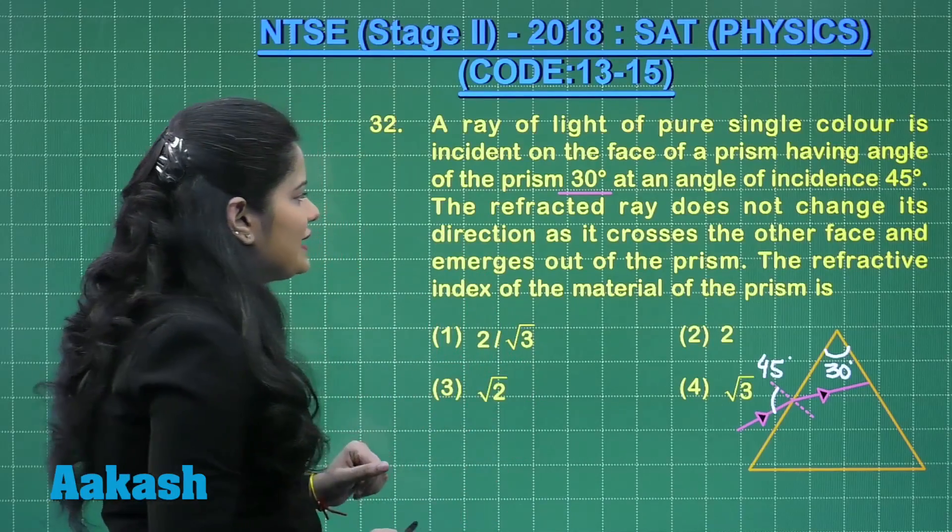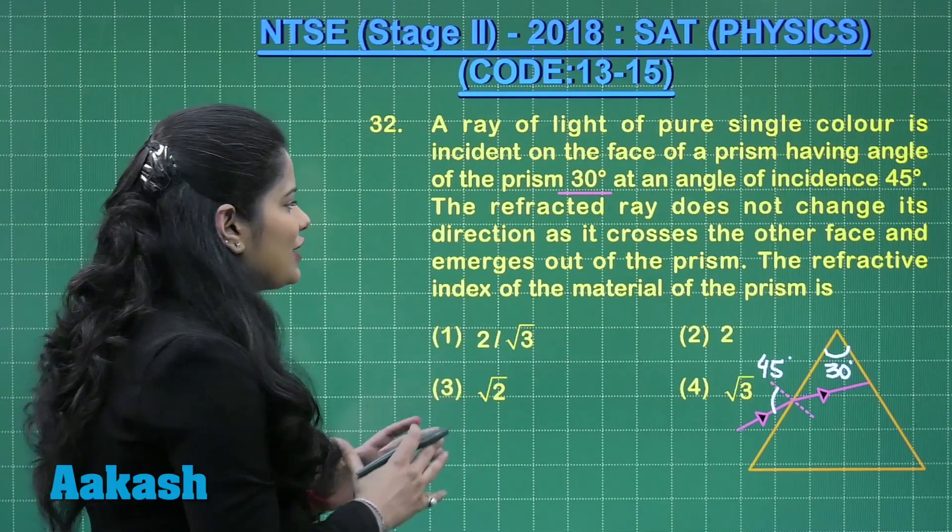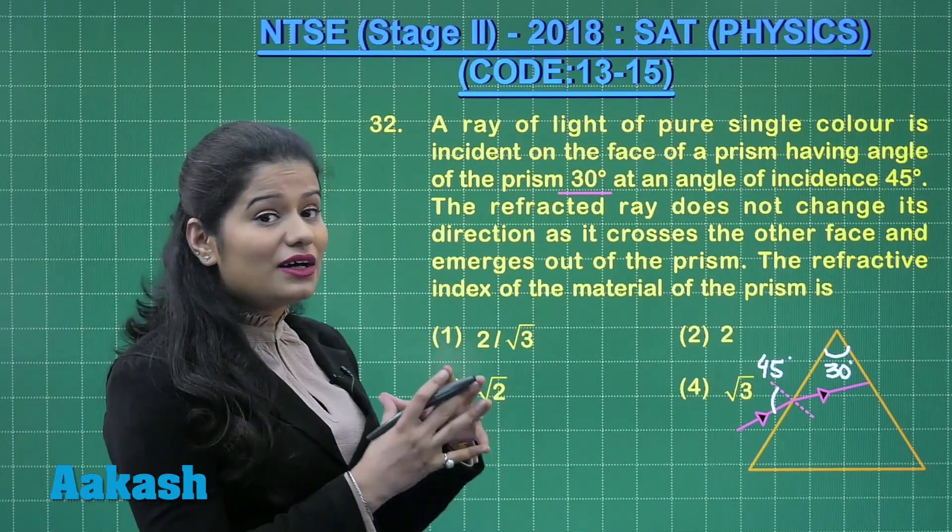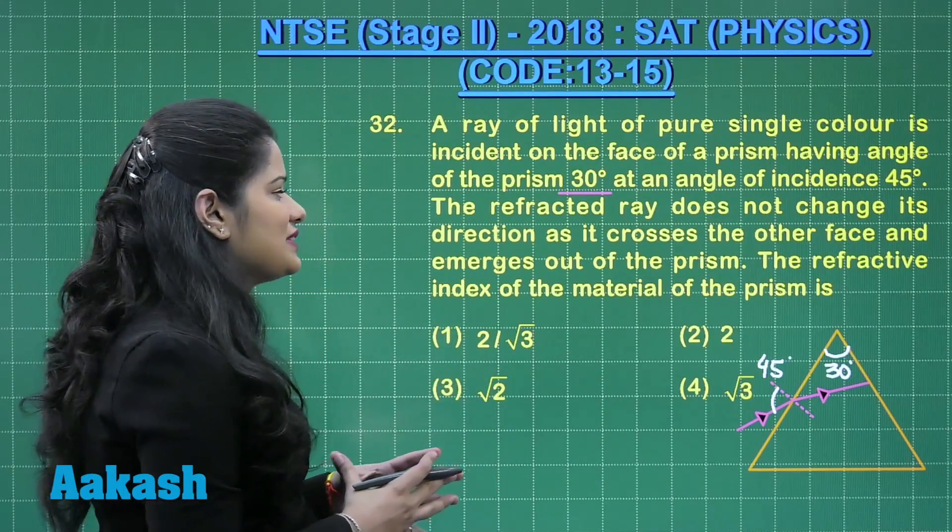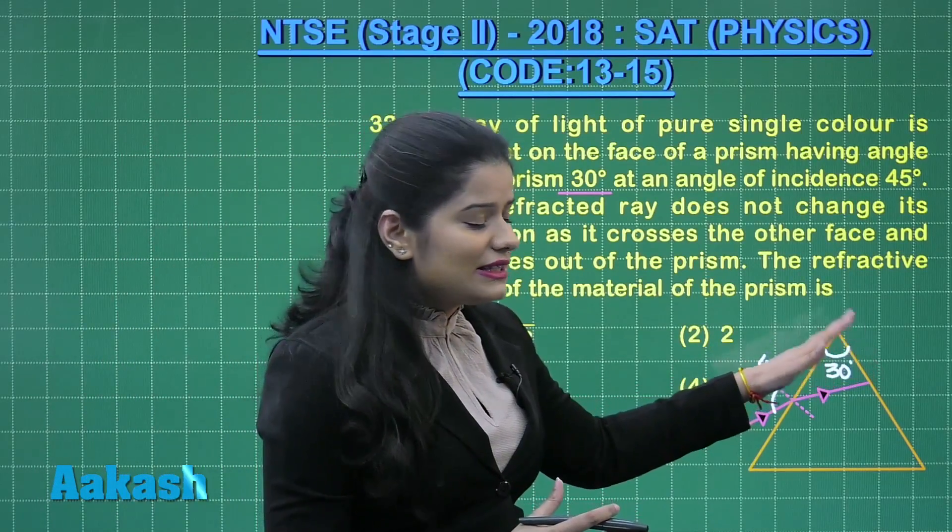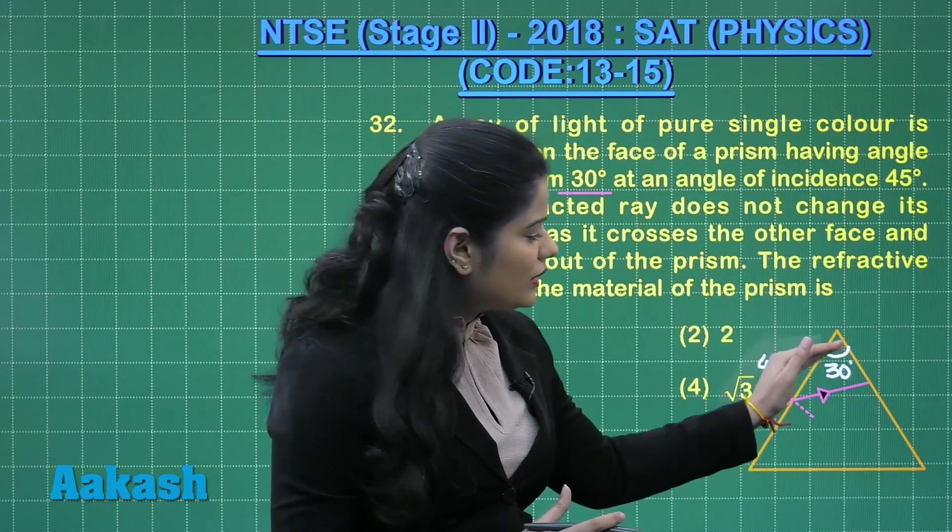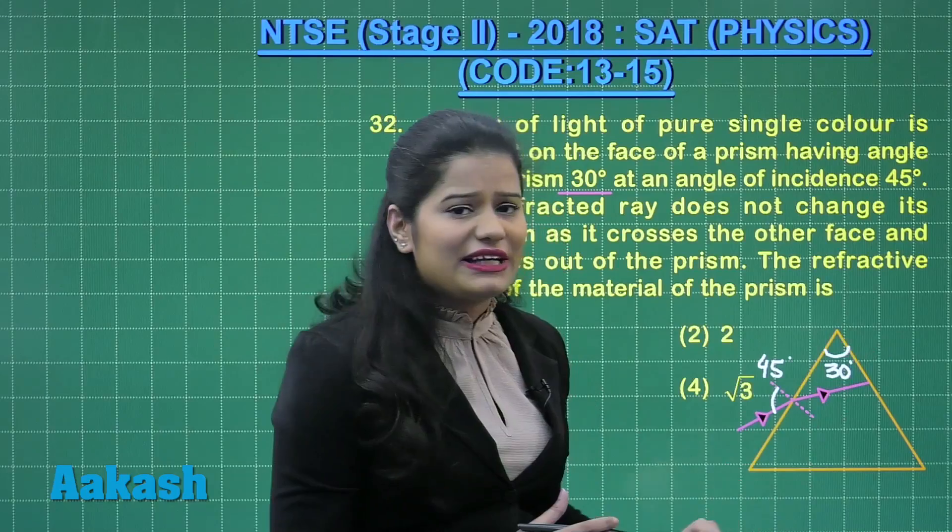Further, the question says the refracted ray does not change its direction as it crosses the other face and emerges out of the prism. So here this is the refracted ray, and the question says the refracted ray does not change its direction on coming out of this face.